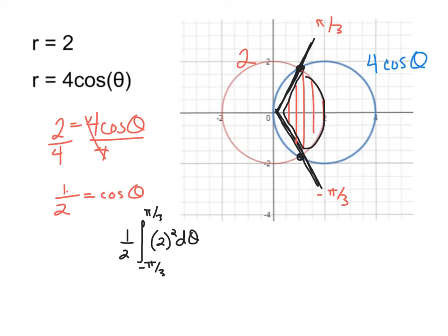And you could really, at this point, you could also do 0 to pi over 3 and double it. Sometimes people really like to do that. They like to just say, I'm just going to go from here to here, so then I don't have to worry about the negative angle. And that's a very valid way to proceed through this problem.